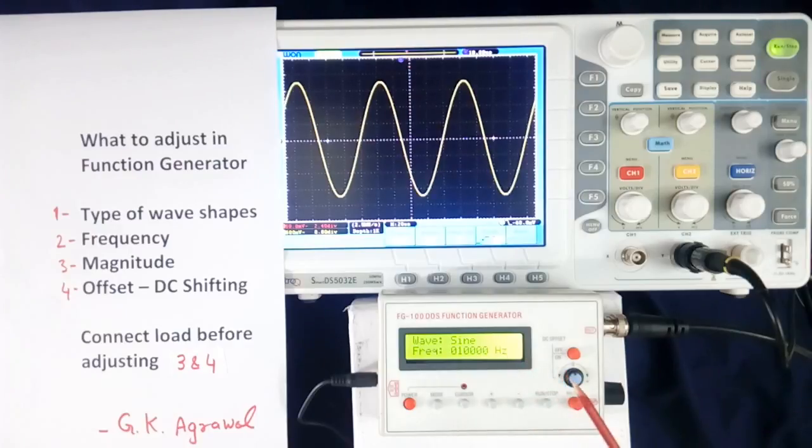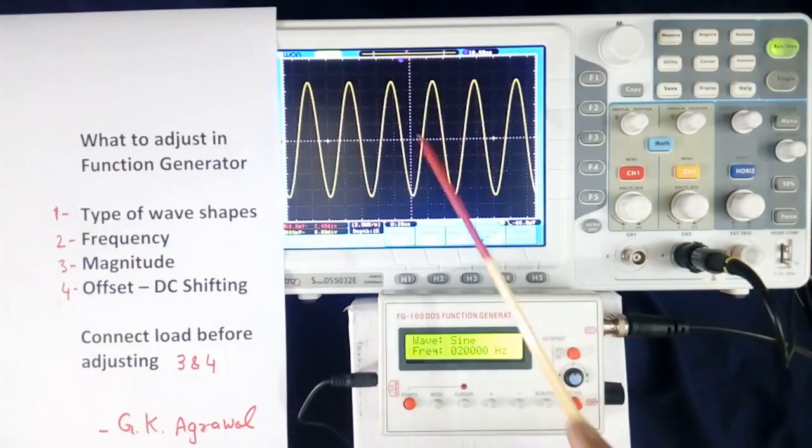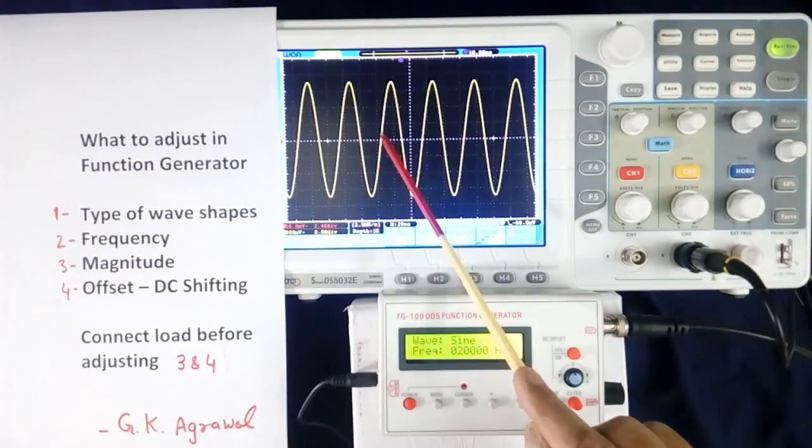Now for changing frequency in this function generator, first I have to switch off, select digit which I want to change by cursor, like this. Now I can increase or decrease. I will increase to 2. Now it is showing 20,000 Hz, it means 20 kHz. Now I will give output. Now it is 20 kHz. From here to here.